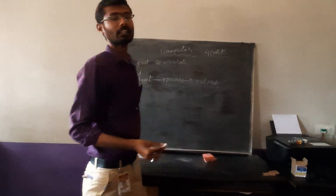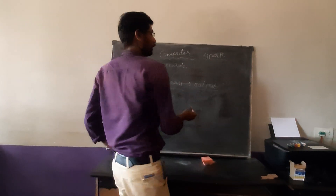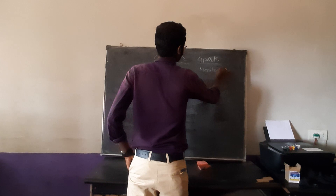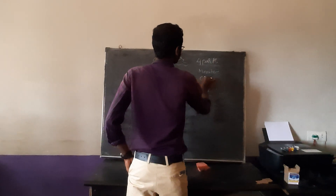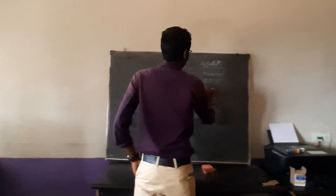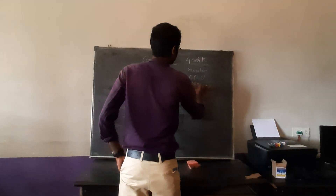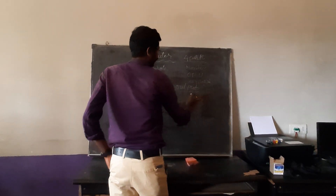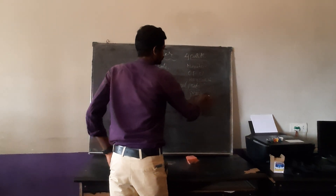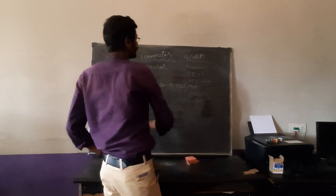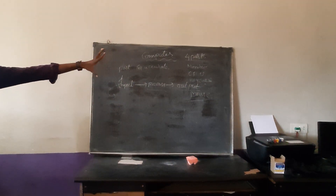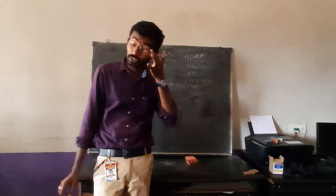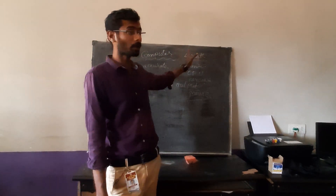What are the parts you can see? Monitor, CPU, Keyboard, and Mouse. In general, these four are the main components — one of them is the name of the computer.